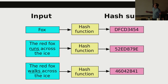What this illustrates is that with different types of hash functions, we may or may not want a property where a small change — for example, 'the red fox runs across the ice' versus 'the red fox walks across the ice' — that's a relatively small change compared to the length of the overall data, but it can produce two hash values that are completely different. That may be useful in some cases and a detriment in others.